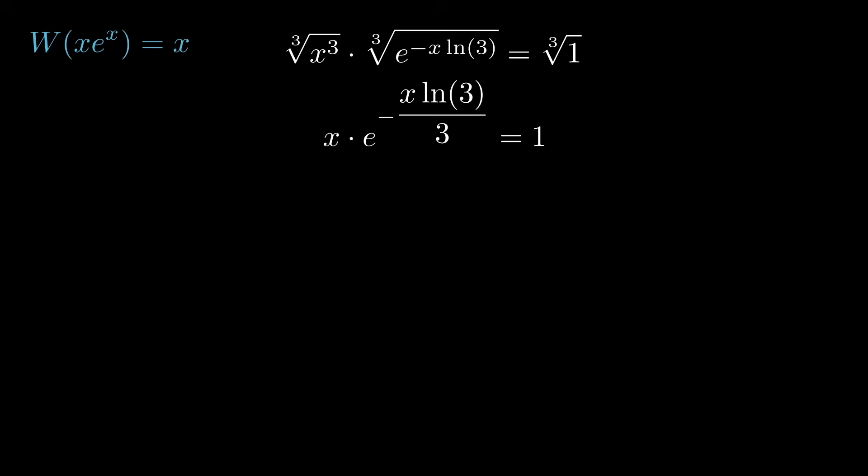Now we're very close to having x e to the x. It's just that in the exponent of e, we don't have x by itself. We have x with a minus natural log 3 over 3 attached. So to have things perfectly line up, multiply both sides by minus natural log 3 over 3.